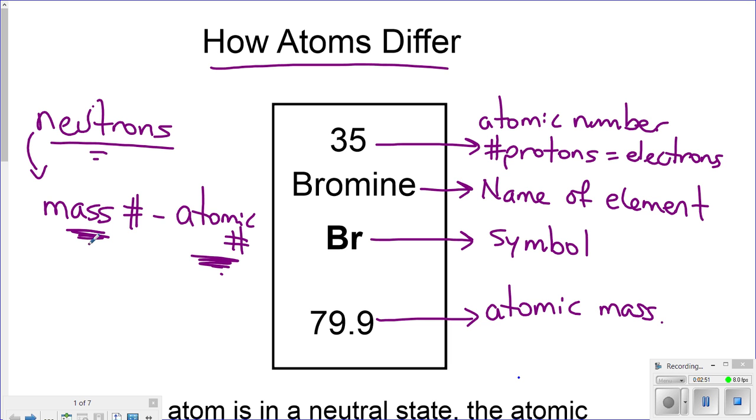So, this little box tells you everything there is to know about the element. Everything, from the name, the symbol, the mass, neutrons, electrons, protons, and all this, when the element is in a neutral state.